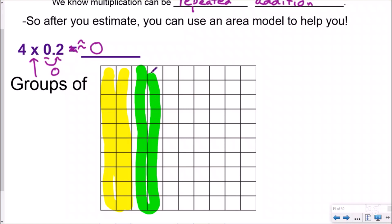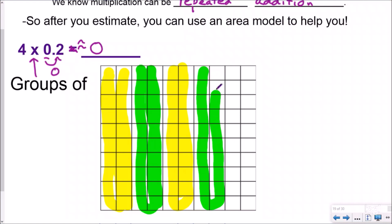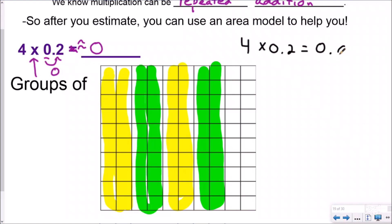Here's my second group of two-tenths — another twenty-hundredths. Here's my third group of two-tenths. And which means I need one more — here is my fourth group of two-tenths. So I've just done four groups of two-tenths. And if I count these up, that would be 10, 20, 30, 40, 50, 60, 70, 80. So I know that my exact answer, four groups of two-tenths, would be eight-tenths or eighty-hundredths.